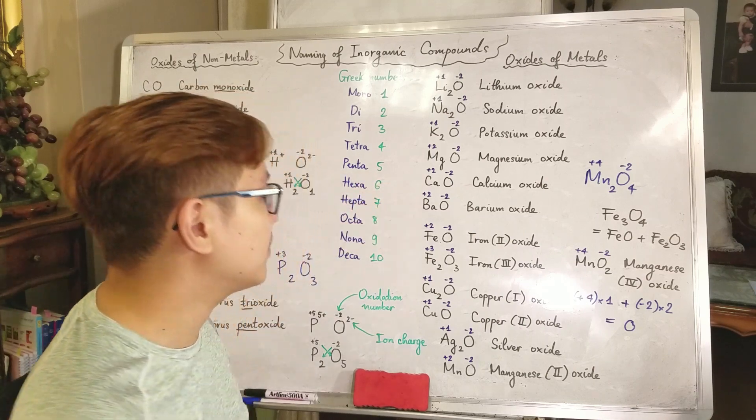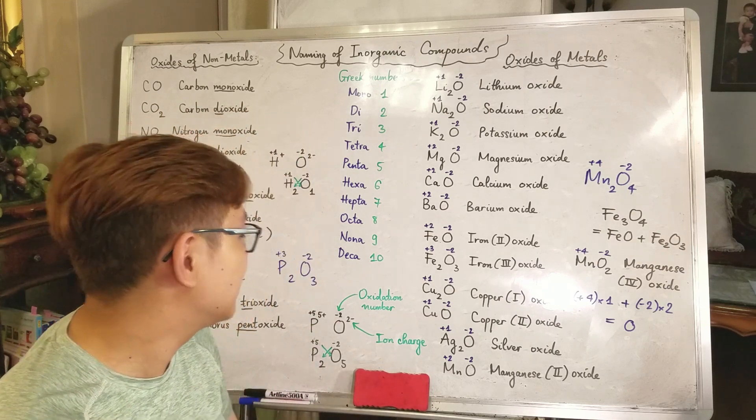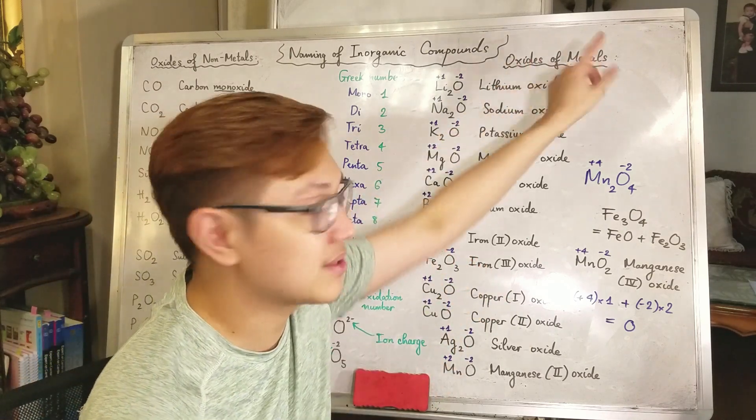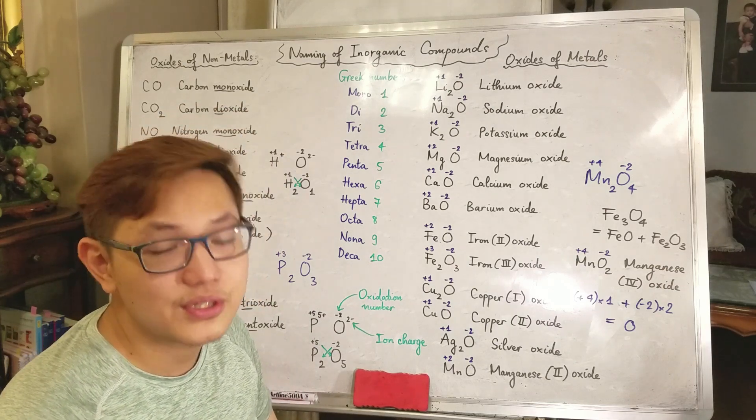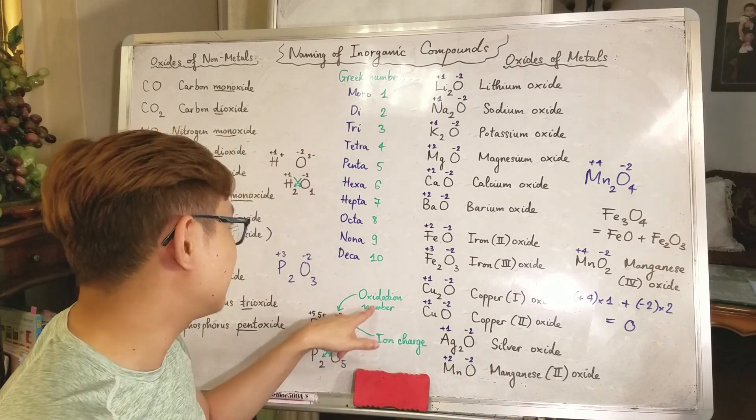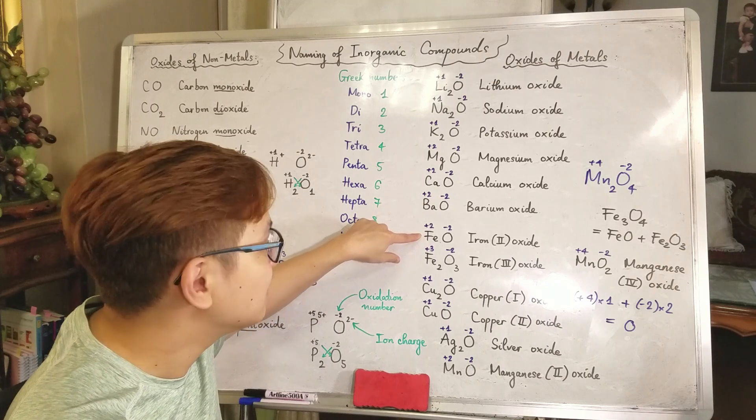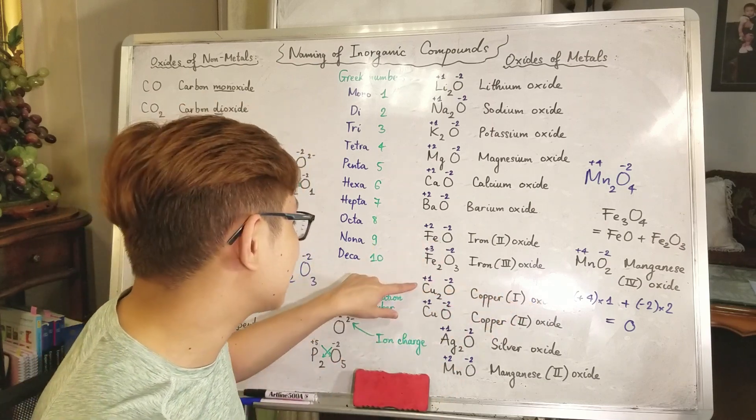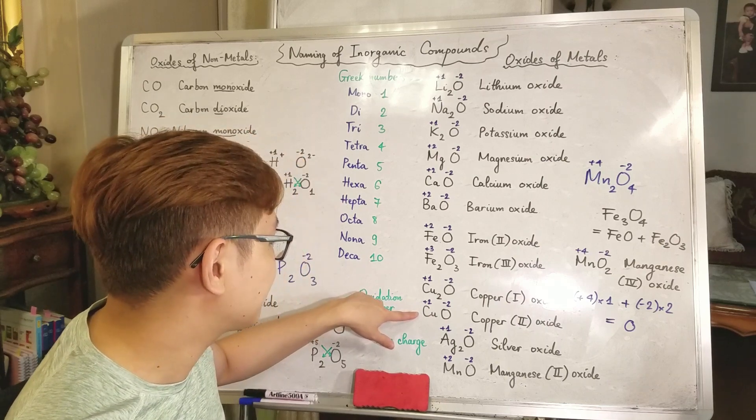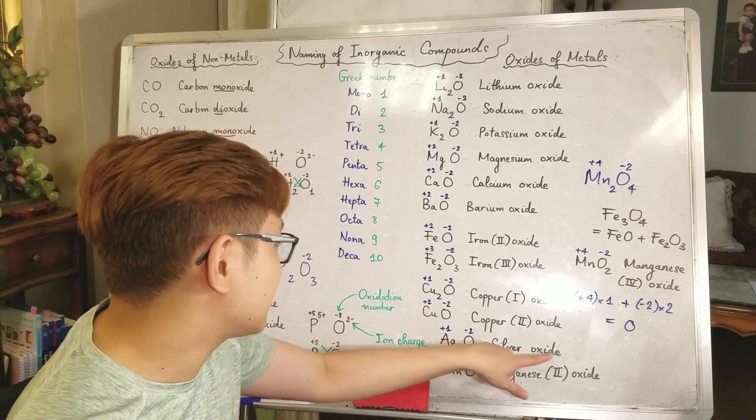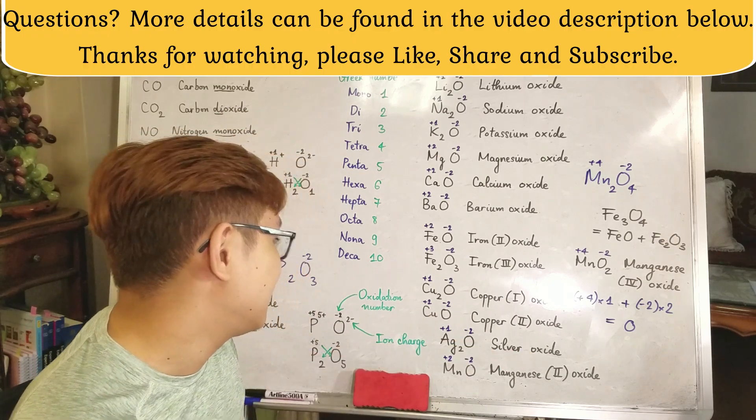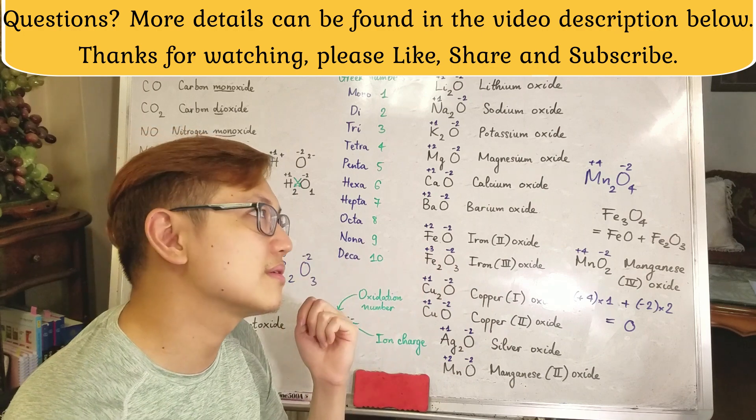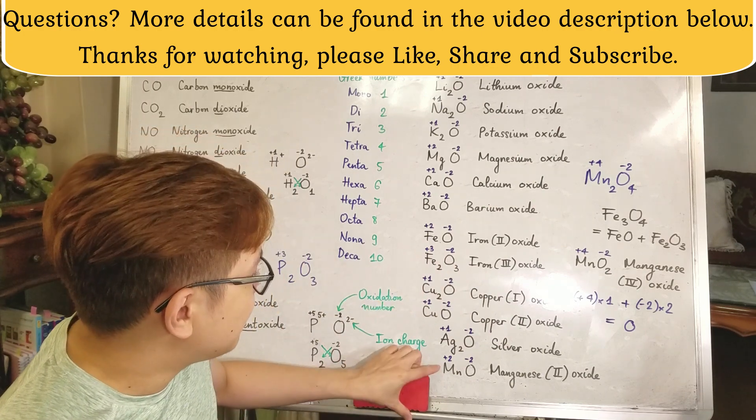But things become much more complicated when you have the transition metal. Before we go there, let me recap a bit. Lithium oxide, sodium oxide, potassium oxide, barium oxide. Now time for the transition metal oxide. Iron, because iron you have iron 2 and iron 3, so now for the oxide of metal you need to indicate their oxidation number, oxidation state or oxidation number. So here is iron(II) oxide, here's iron(III) oxide. Copper, you have copper 1 and copper 2, so you have copper(I) oxide and copper(II) oxide.